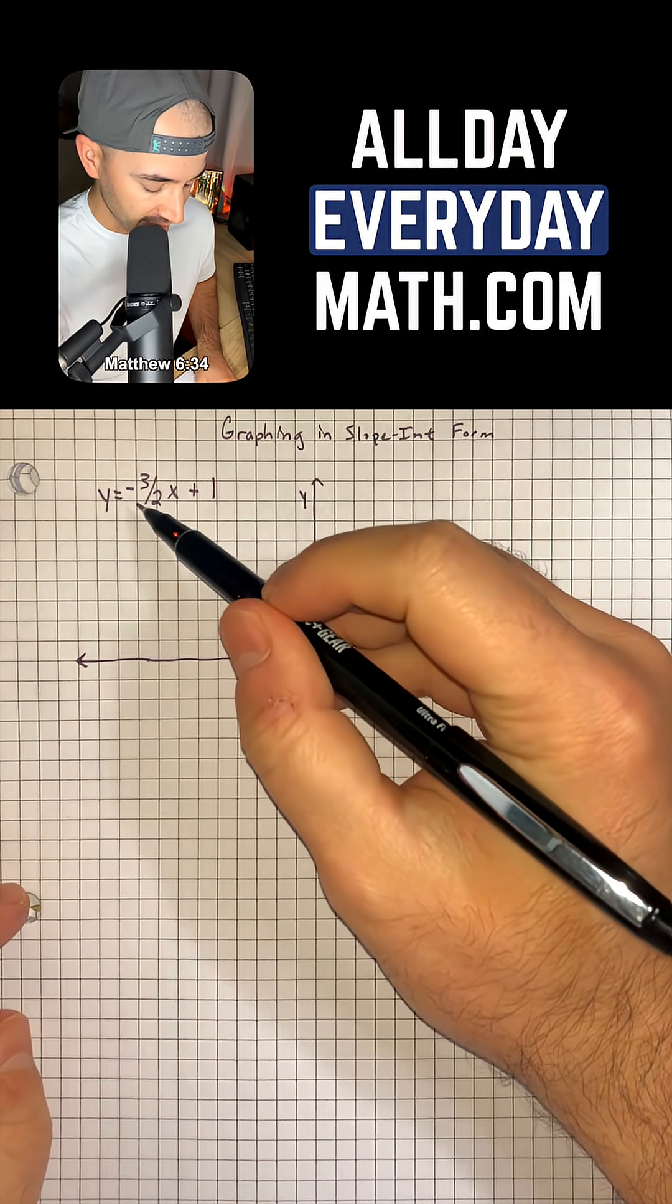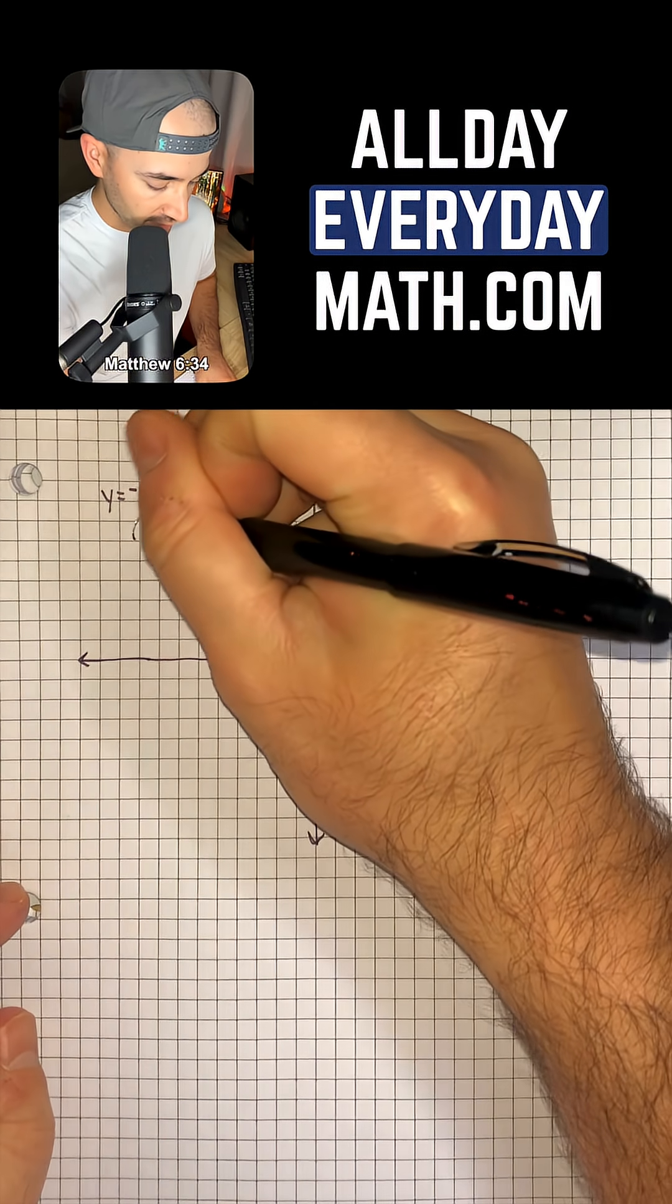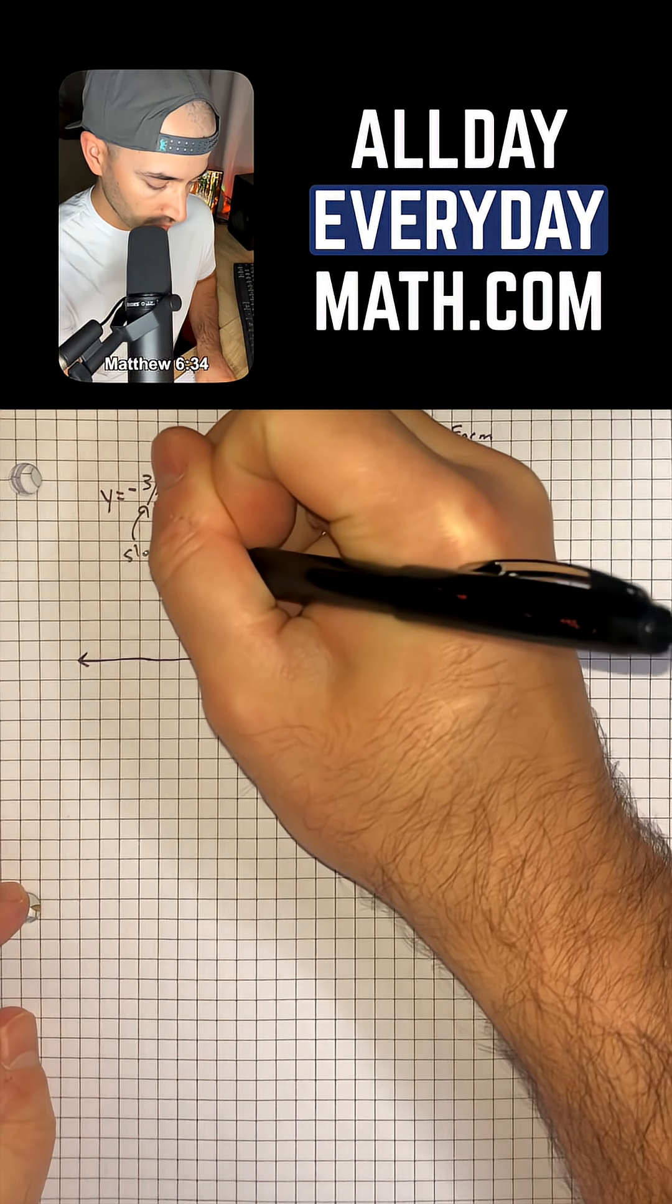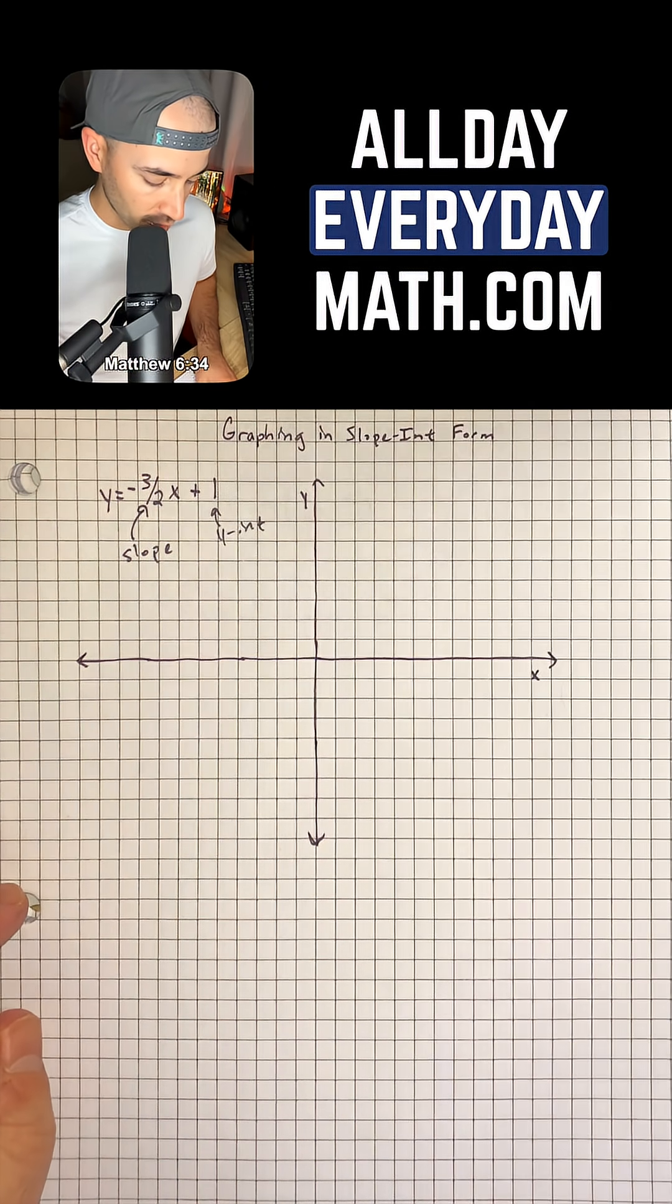So we have the equation y equals negative 3 over 2x plus 1. Here's what we have: a slope of negative 3 over 2 and a y-intercept of positive 1.